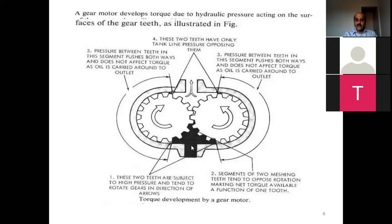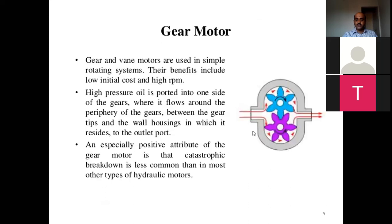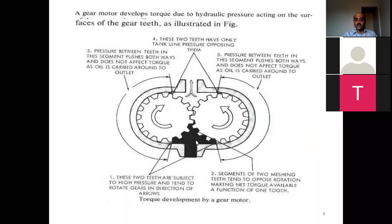This is the inlet and this is the outlet. High pressure oil enters, passes through the periphery between the gears and wall housing, and comes out of the outlet. One especially positive attribute of the gear motor is that catastrophic failures do not occur, which is more common in other hydraulic motor types.